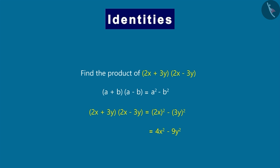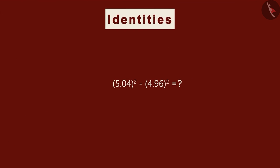Let us move on to the next example. Can you find the value of this? Can we use this identity here? We can see that this is in the form of a square minus b square. Here, a is 5.04 and b is 4.96.